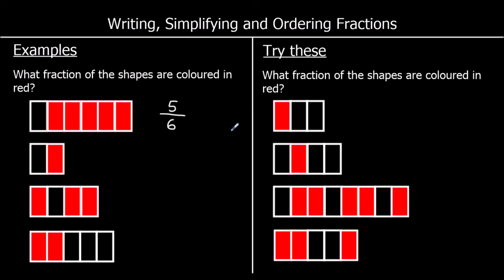For the second one, there are two parts and one is red. So one out of two are coloured in red, and we write that as one over two or one half. One out of two is red.